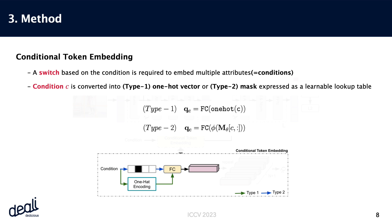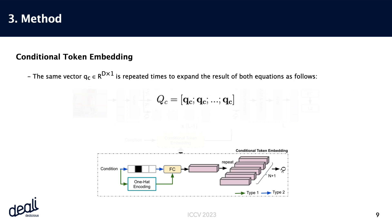Condition C can be transformed into either type 1, a one-hot vector, or type 2, a mask, which is represented as a trainable lookup table. To ensure compatibility with the input requirements of the vision transformer's attention mechanism, the vector QC is replicated multiple times, effectively aligning dimensions as follows.